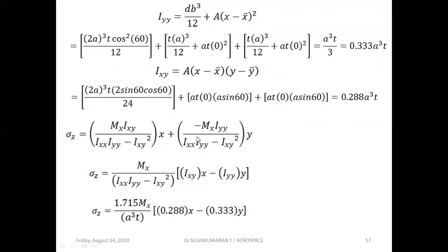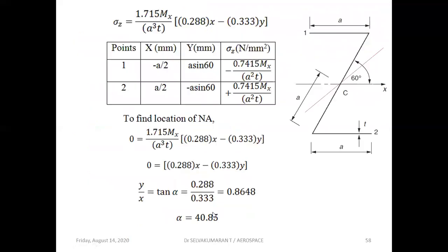Substituting Ixx, Iyy, Ixy, and Mx (already substituted as minus Mx), the final sigma_z expression becomes: 1.715·Mx / (a³t) × (0.288x − 0.333y). At point 1, x = −a/2 and y = a·sin60; at point 2, x = a/2 and y = −a·sin60. Substituting gives sigma_z at point 1 as −0.7415·Mx/(a²t) and at point 2 as +0.7415·Mx/(a²t).